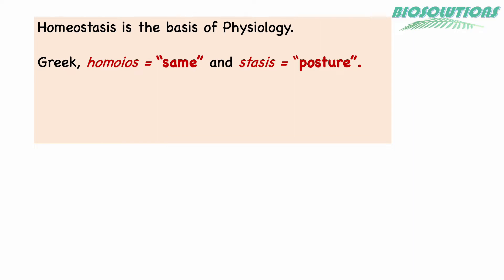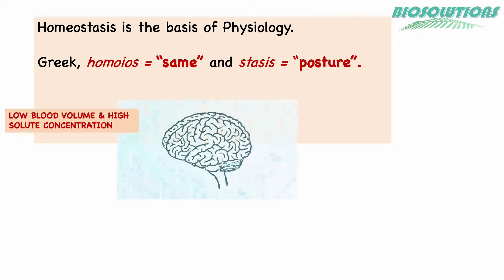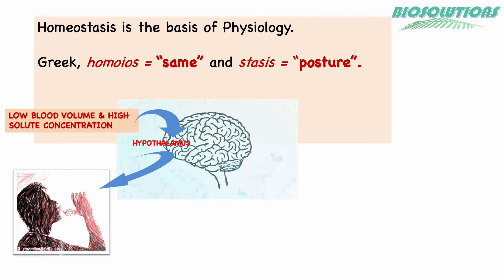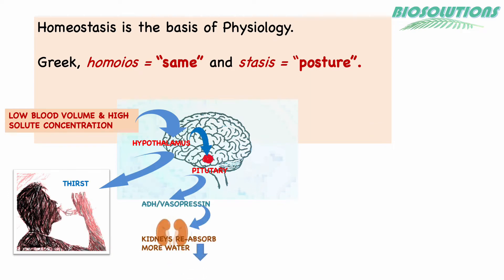As external and internal conditions keep changing, our body keeps adjusting to maintain homeostasis by various adaptive mechanisms — like to maintain body fluid composition, constant thirst, renal activity, hormones etc. are crucial.